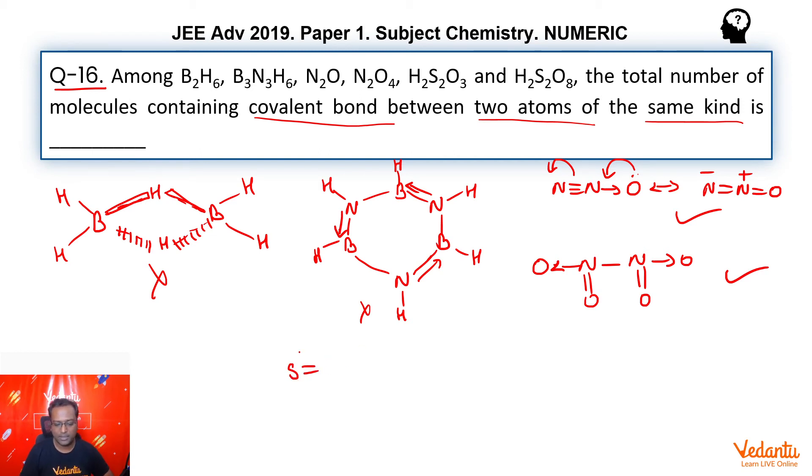H2S2O3, thiosulfuric acid. Thiosulfuric acid, we know there is a SS bond. So there is a same atom bond here.